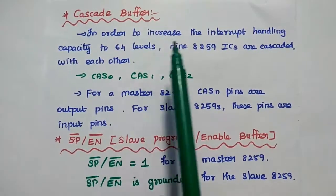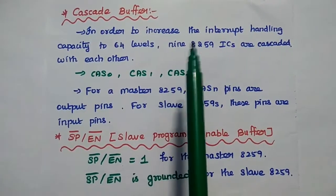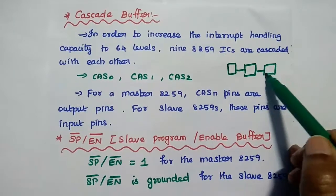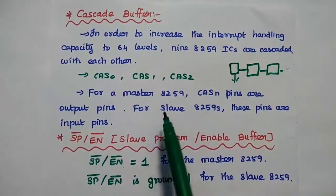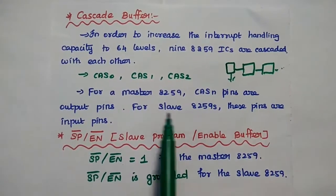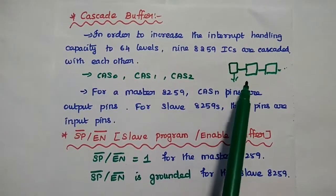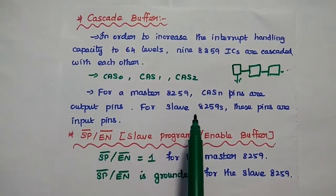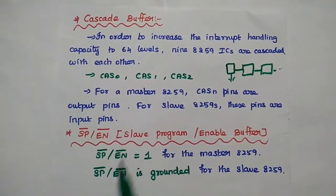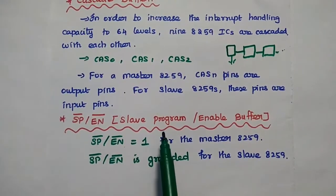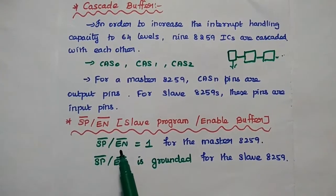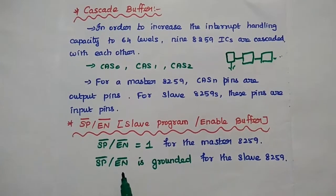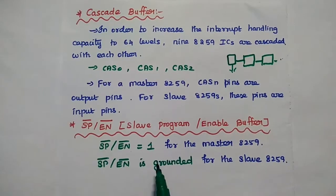The cascade buffer is used to increase the interrupt handling capacity to 64 levels by cascading 8259 ICs with each other. The first chip is called the master 8259, and the remaining chips are called slaves. The 3 CAS pins are used to enable or disable each 8259 IC — for a master 8259 these pins are used as output pins, and for the slave they are input pins. The SP bar/EN bar signal — slave program or enable buffer — must be logic 1 for the master and grounded (logic 0) for the slave 8259.